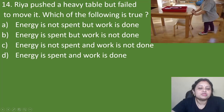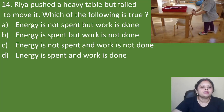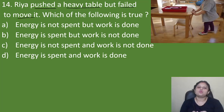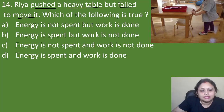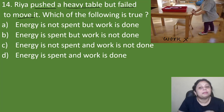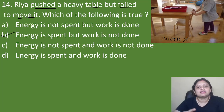Next question: Rhea pushed a heavy table but failed to move it. Which of the following is true? Option A: energy is not spent but work is done. B: energy is spent but work is not done. C: energy is not spent and work is not done. D: energy is spent and work is done. She is applying energy trying to push the table, but since it is not moving, work is not done. The correct answer is option B — energy is spent but work is not done.